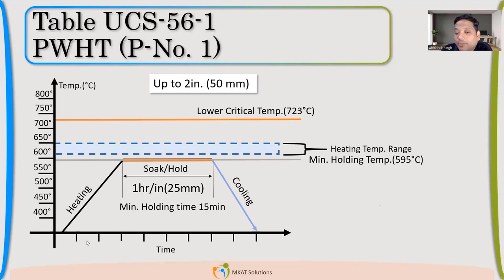Now, what should be the time? This is very, very important. Holding time should be 1 hour per inch. So now let us find out for what thickness for P1 it becomes mandatory. For 38mm, what should be my holding time? For 38mm thickness, based on 1 hour per inch, what should be my holding time, not holding temperature?